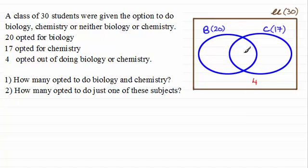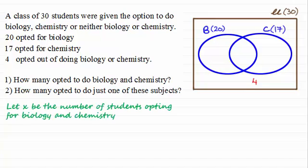Now that leaves me with three regions here that I don't seem to have values for and this is where we need to use some algebra. So what we do is let x equal something. In this case I'm going to say let x be the number of students opting for biology and chemistry. So I'll just label that with x. So those that just do biology only must be 20 minus x. And those that do chemistry only must be 17 minus x.